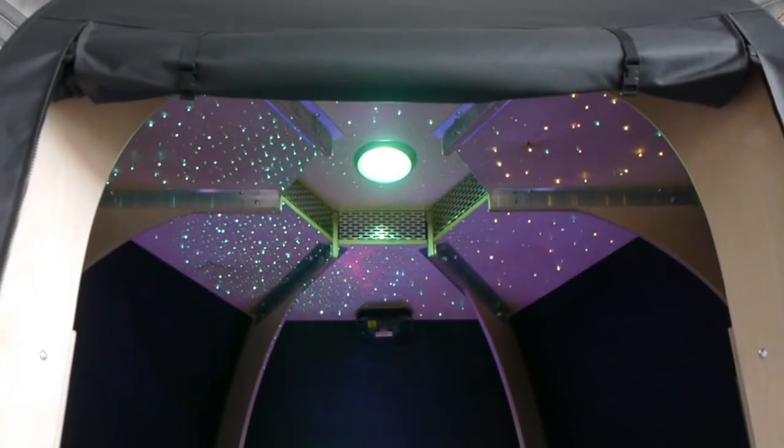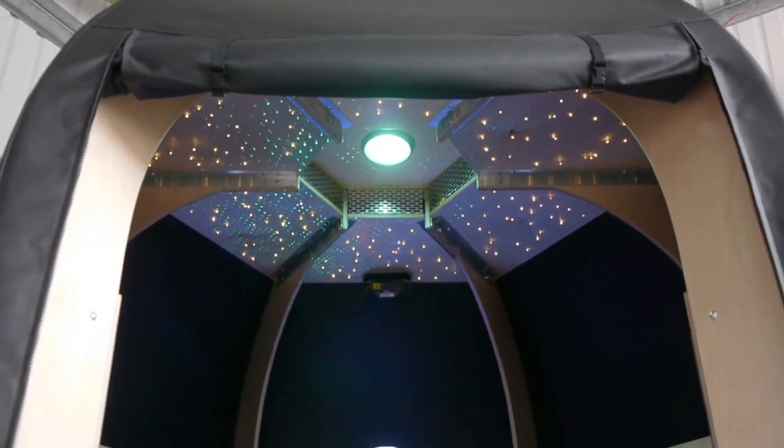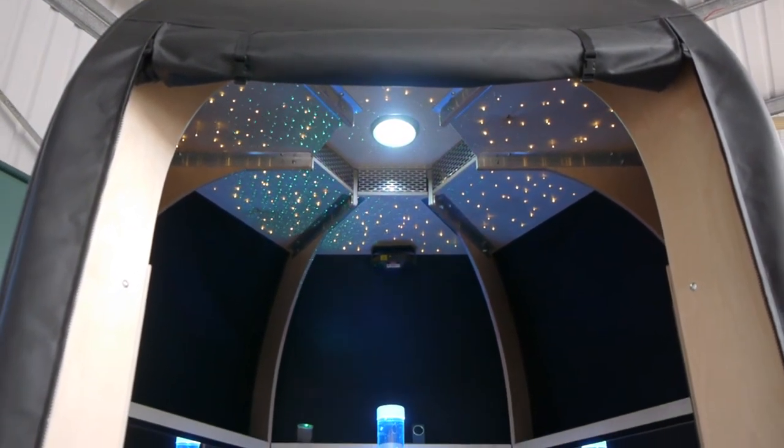From following bright lights, shapes and patterns with their eyes to the Sensory Room changing colour repeatedly, children will become interested in their environment.